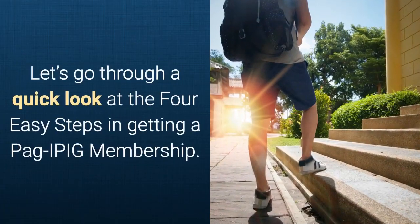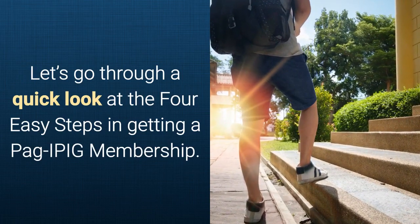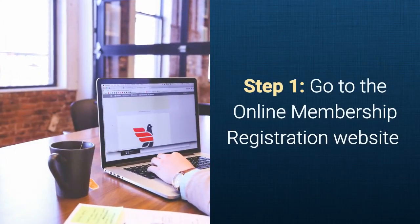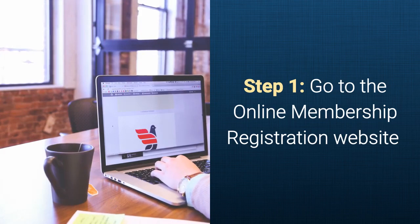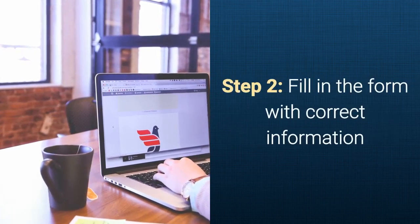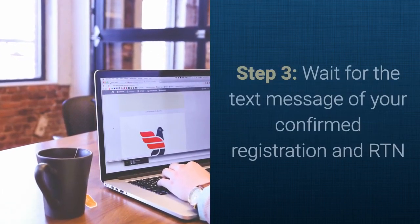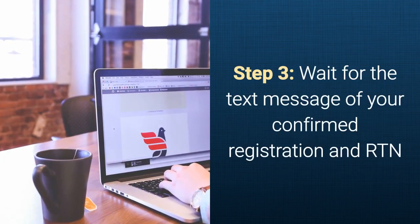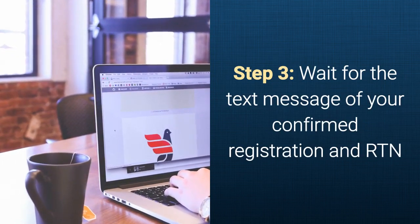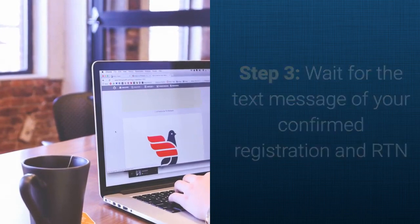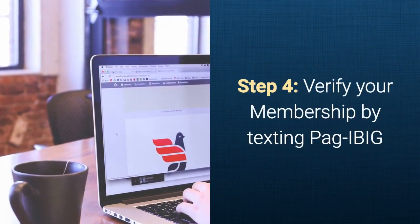Let's go through a quick look at the four easy steps in getting a Pagibig membership. Step 1: Go to the online membership registration website. Step 2: Fill in the form with the correct information. Step 3: Wait for the text message of your confirmed registration and RTN. And finally, Step 4: Verify your membership by texting Pagibig.